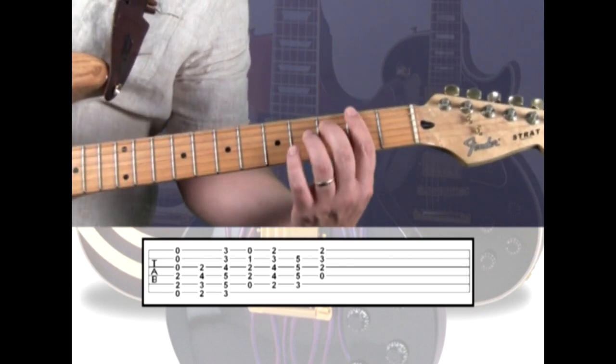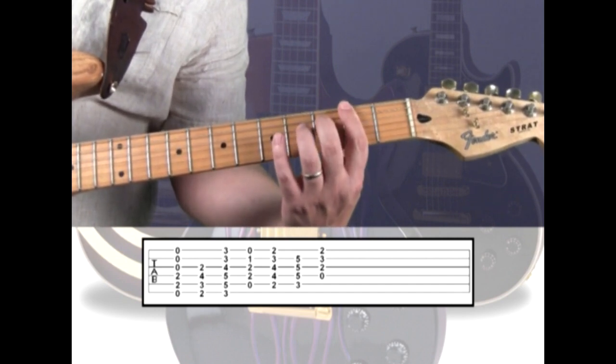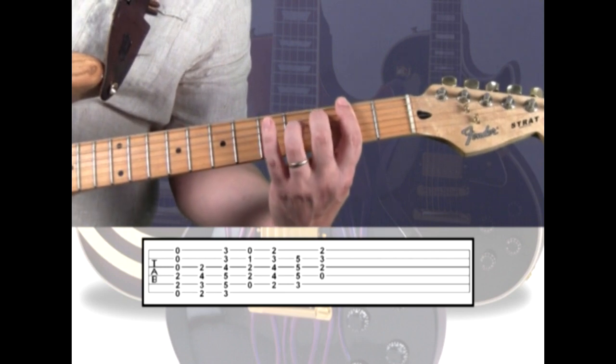The F sharp diminished is an index barring the 2nd fret from strings 3 through 6, 5th string 3rd fret with the middle, and the 4th string 4th fret with the ring.